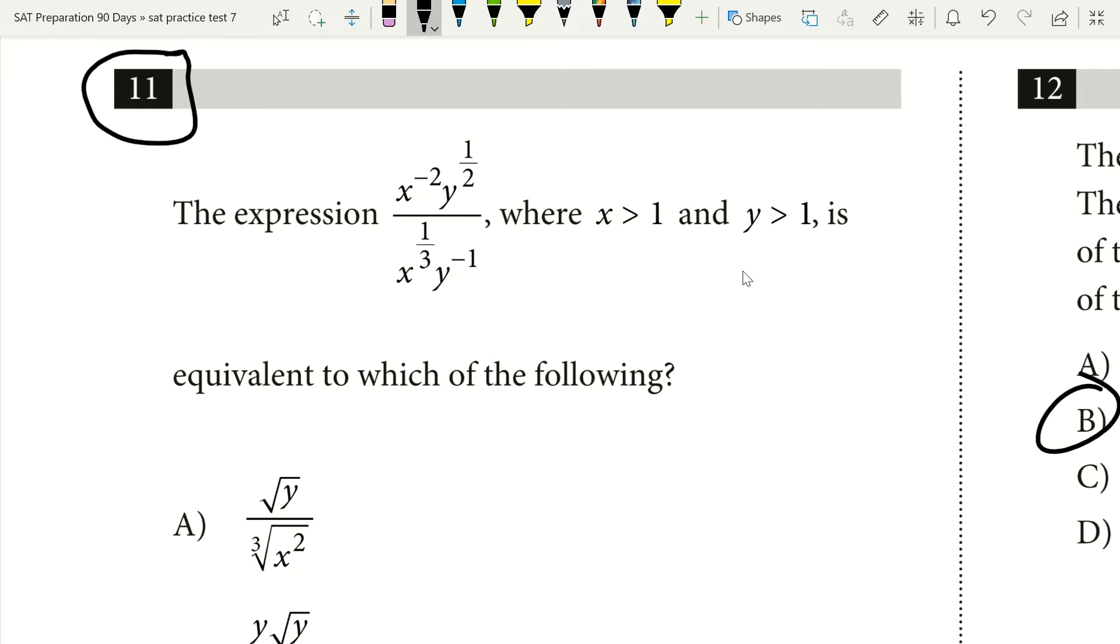So I take a look at this equation. I have the expression x to the power of negative 2 times y to the power of 1/2, all divided by the quantity x to the power of one-third times y to the power of negative 1, where x is greater than 1 and y is greater than 1. It's equivalent to which of the following below.